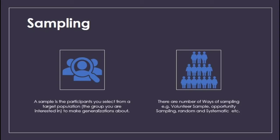Sampling can be done in a number of ways: voluntary sample (those who volunteer), opportunity sample (those who are available), random sample, or systematic sampling.